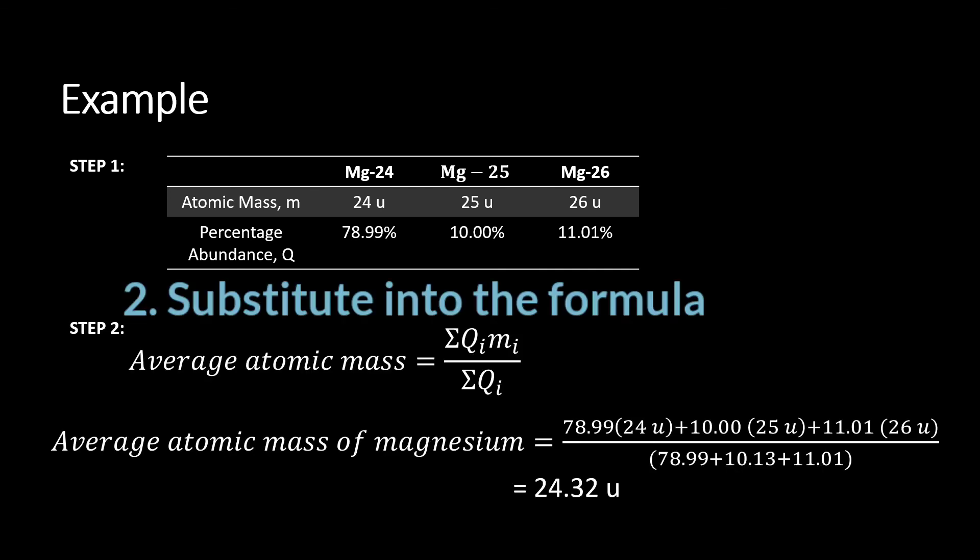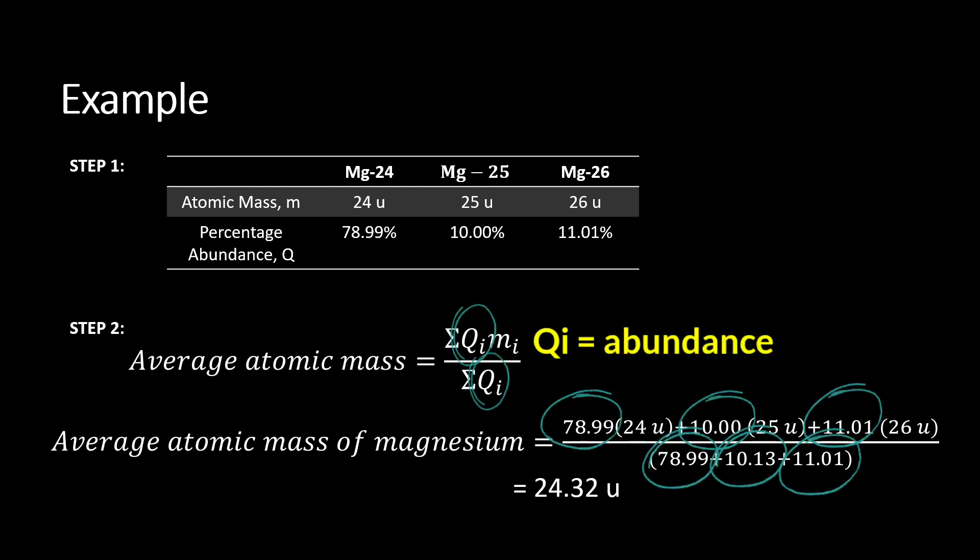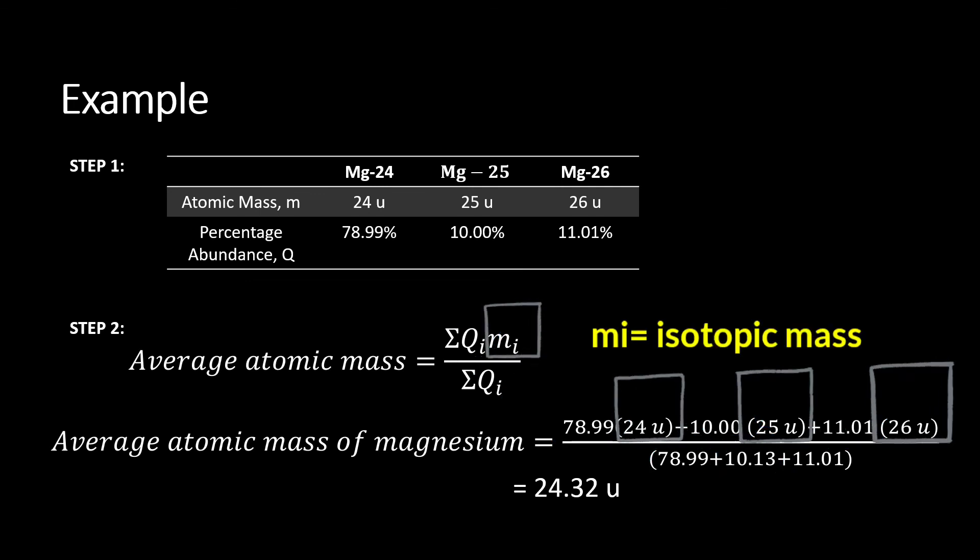Step number two, just need to substitute all the information into the formula to give us the average atomic mass of magnesium, which is equal to 24.32u.